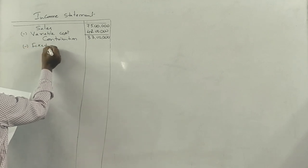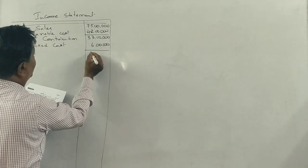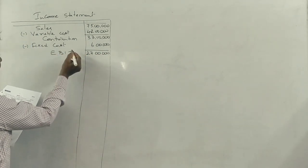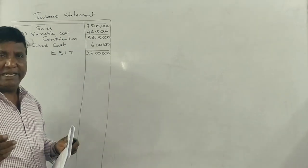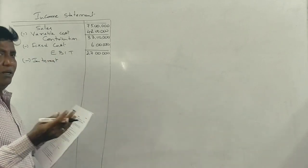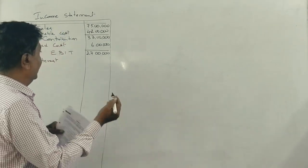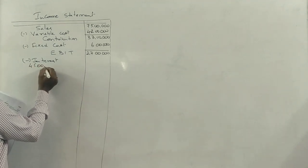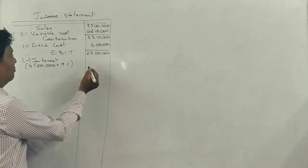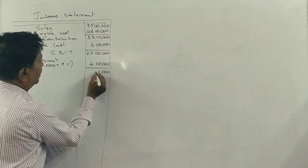From contribution, fixed cost of ₹6 lakhs is subtracted. So EBIT — earnings before interest and tax — is ₹27 lakhs. Interest is ₹45 lakhs at 9%, so interest equals ₹4 lakhs 5,000 (₹4.05 lakhs). Interest is subtracted.